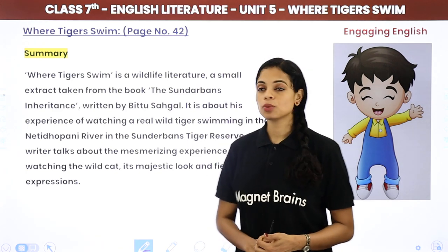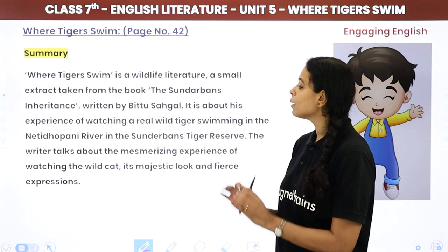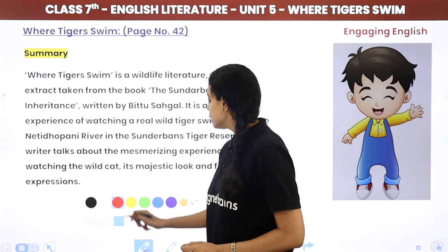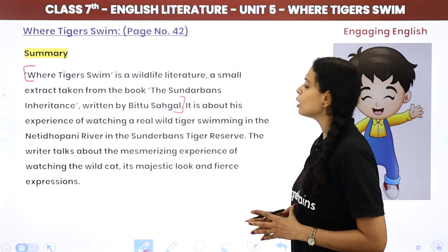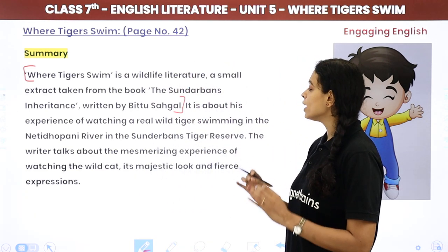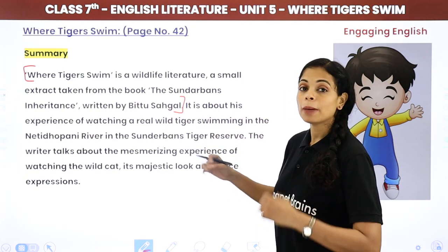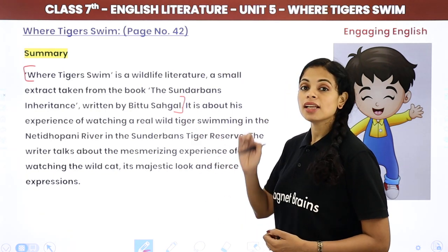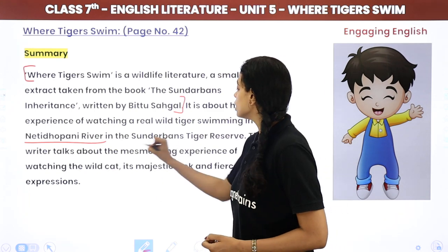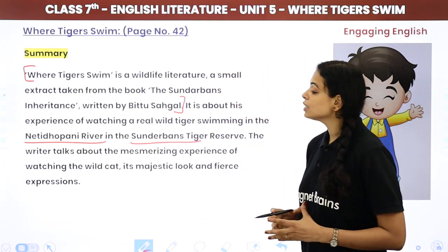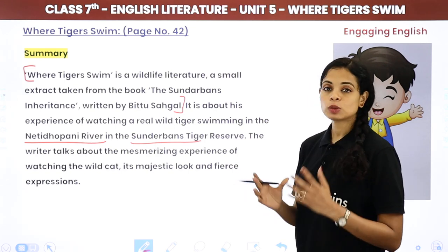'Where Tigers Swim' is a wildlife literature extract taken from the book 'The Sundarbans Inheritance', written by Bittu Sehgal. It is about his experience of watching a real wild tiger swimming in the Neti-Dhopani river in the Sundarbans Tiger Reserve. The writer talks about the mesmerizing experience of watching the wild cat, its majestic look and fierce expressions.